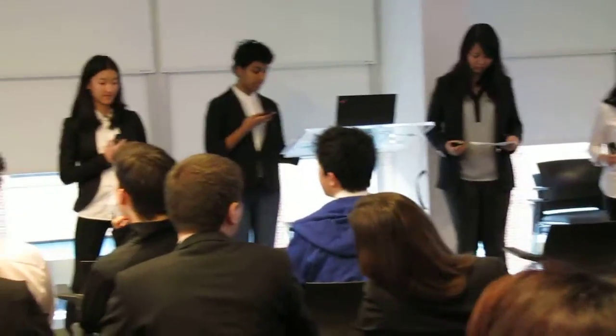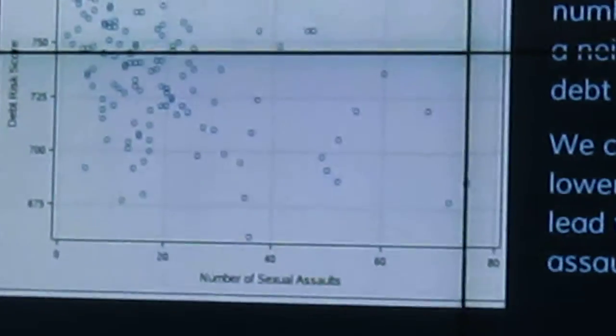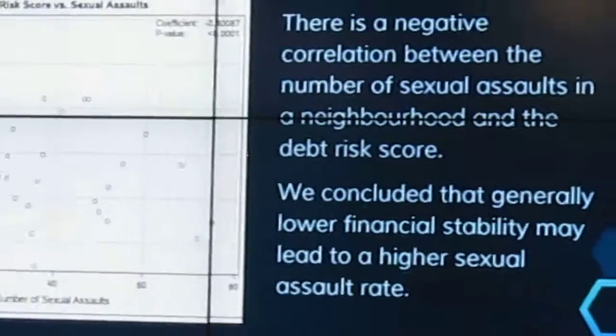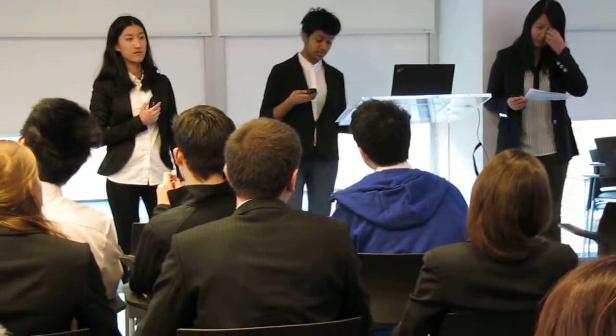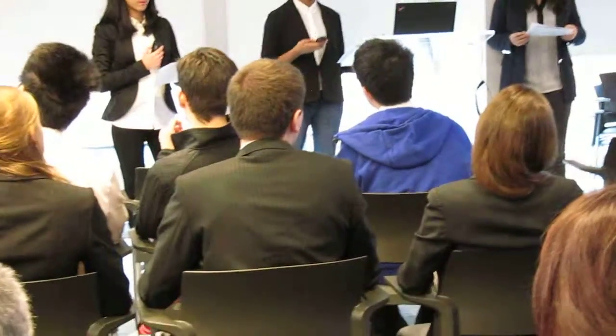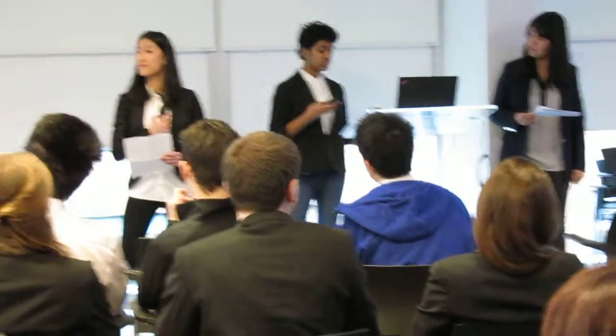Our third variable compares sexual assaults in each neighborhood with the debt risk score. There is a vaguely negative correlation between these two variables. We concluded that generally, if a neighborhood has lower financial stability, it tends to have more sexual assaults because there is less community support and fewer job opportunities, leading individuals to lash out. This kind of environment may lead to more sexual assaults because the added stress of being in debt affects people mentally and leads them to make unjust decisions, which we hope to rectify in the future.